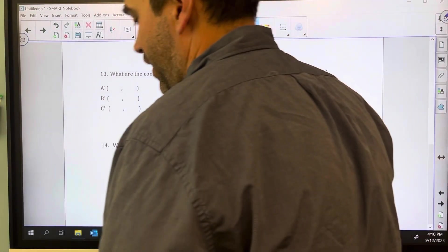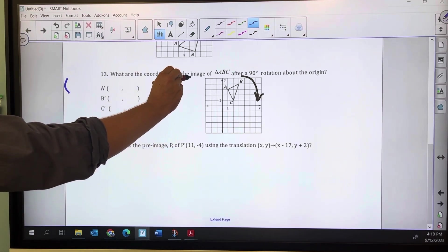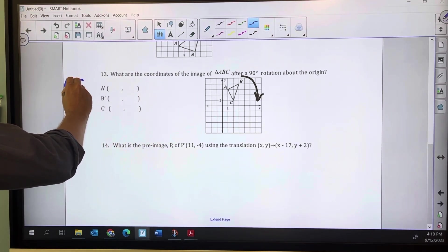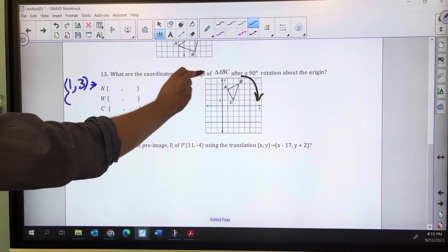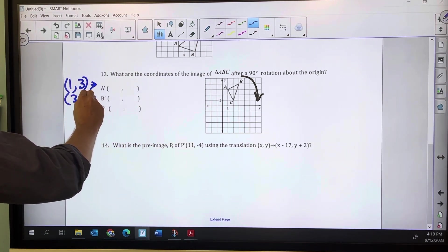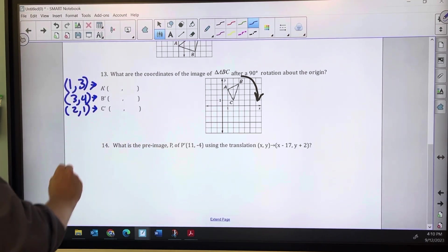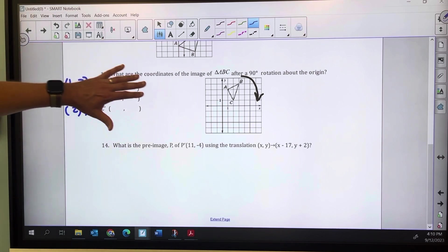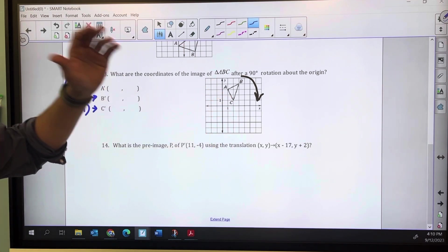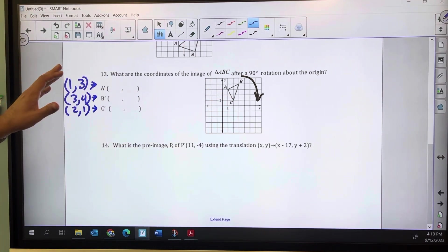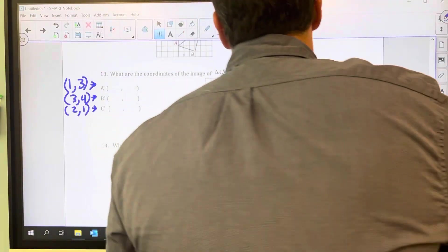So I'm going to start with where A, B, and C are. We've got A is at (1,3), B is at (4,3), and C is at (2,1). Now when we rotate that 90 degrees, I like to imagine actually turning it 90 degrees, so I'm going to push this picture around. In my head,